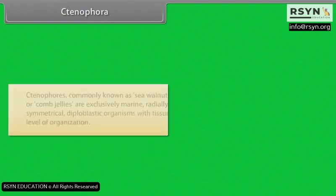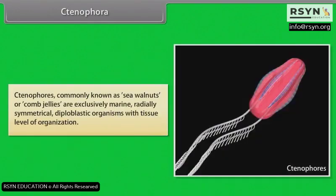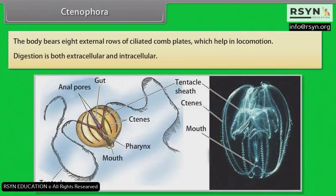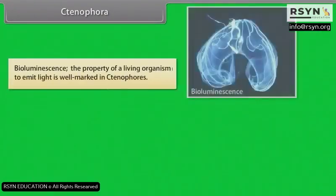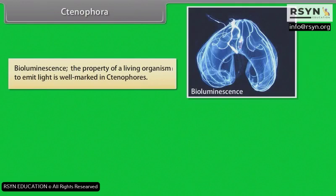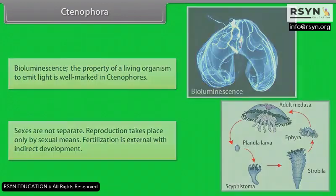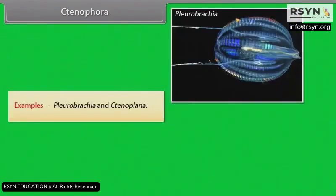Ctenophora: ctenophores, commonly known as sea walnuts or comb jellies, are exclusively marine, radially symmetrical, diploblastic organisms with tissue level of organization. The body bears eight external rows of ciliated comb plates which help in locomotion. Digestion is both extracellular and intracellular. Bioluminescence — the property of a living organism to emit light — is well marked in ctenophores. Sexes are not separate; reproduction takes place only by sexual means. Fertilization is external with indirect development. Example: pleurobrachia and ctenoplana.